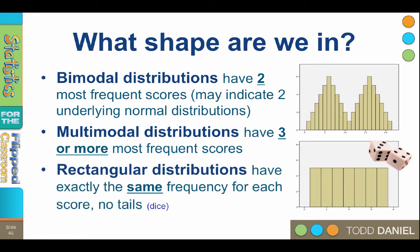Rectangular distributions have the same frequency for all scores. If you roll a single die 100 times, how many times would you expect to get a one? Well about one-sixth of the time. In fact, you would expect to get each of the scores, one through six, approximately one-sixth of the time. That is a rectangular distribution.